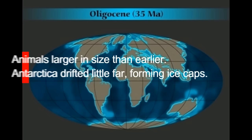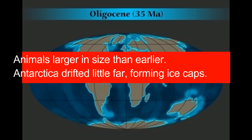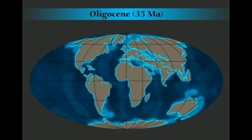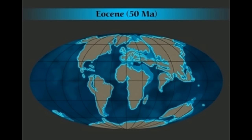North America, Europe, and Russia arose from the Laurasian landmass, while portions of Africa, India, and South America were formed from Gondwanaland. Before the formation of the Indian subcontinent, the enormous Tethys Ocean was present in the area, but after the collision of the Arabian tectonic plate with Eurasia, this ocean disappeared with the formation of the Mediterranean Sea.